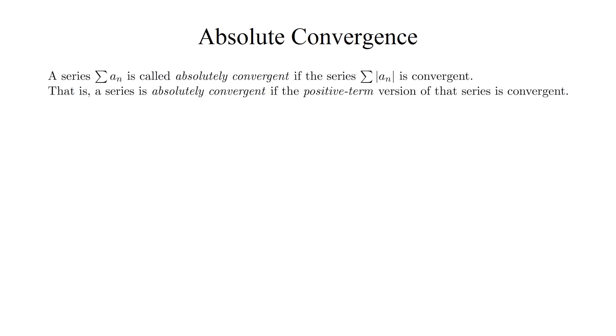We say a series is absolutely convergent, or converges absolutely, if the series you get by making all of the terms positive is convergent. That is, a series is absolutely convergent if the positive term version of the series is convergent.